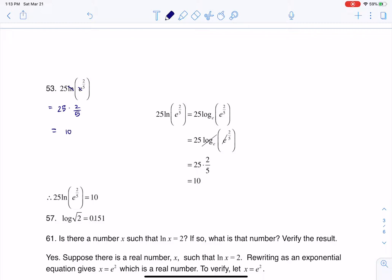But let me just explain this a little bit more. So if we have 25 times the natural log of e to the two fifths, that would be 25 times log base e of e to the two fifths. And again, logarithms, right?